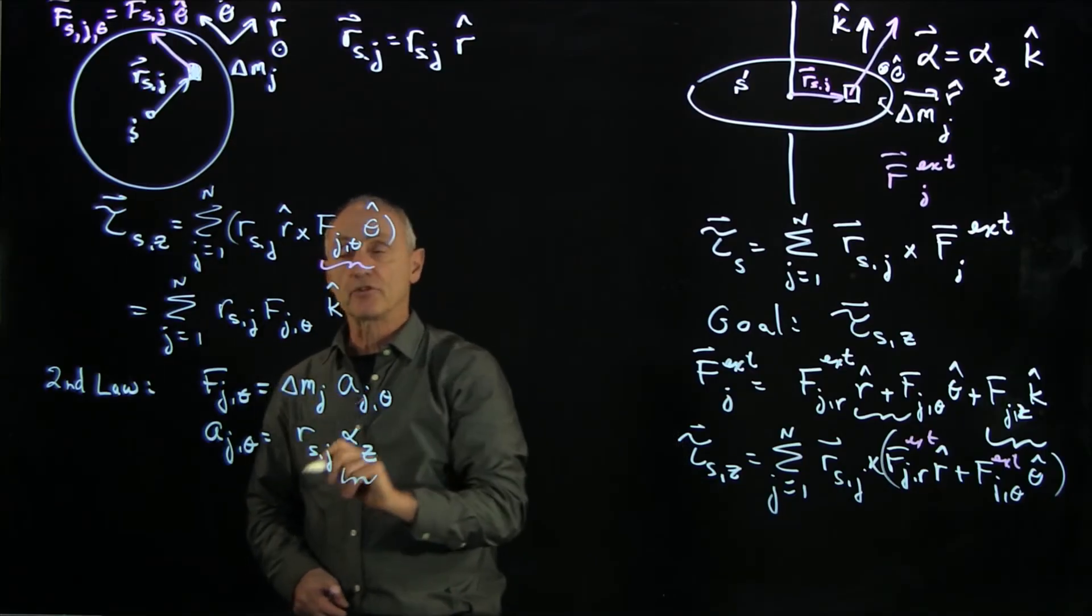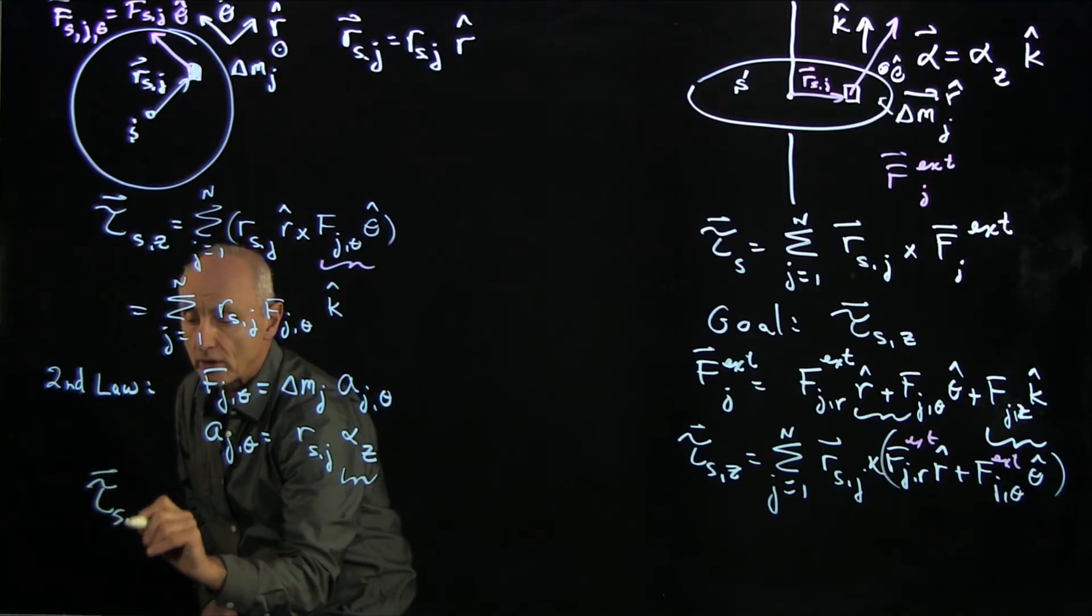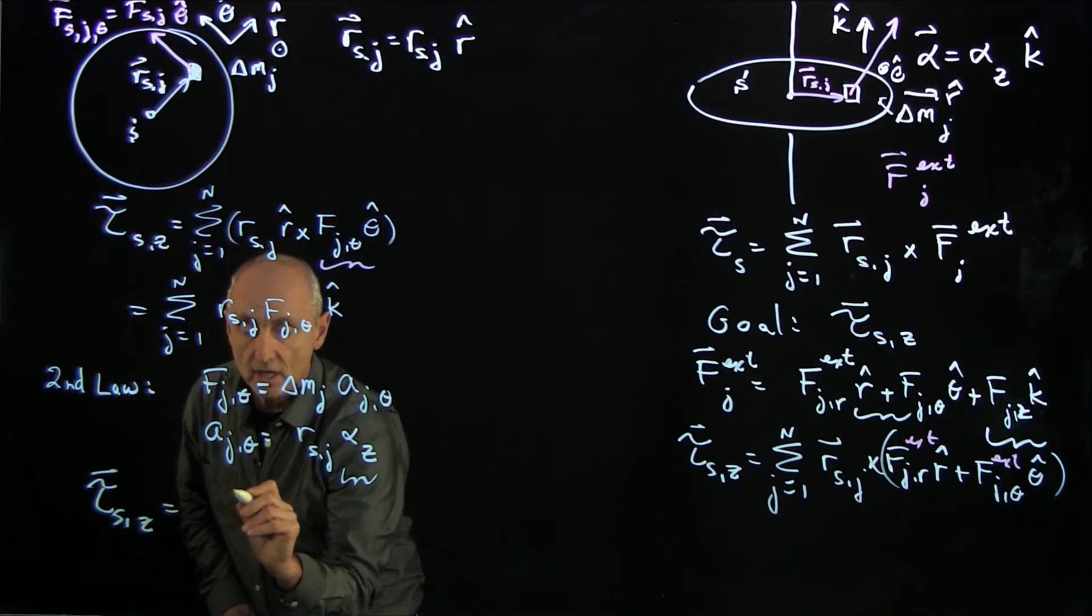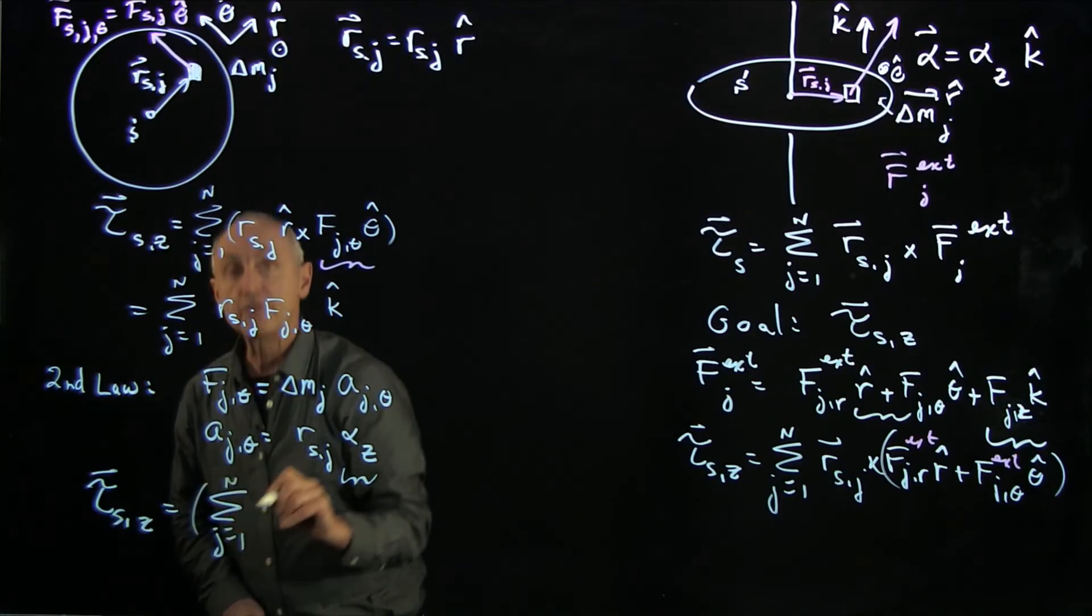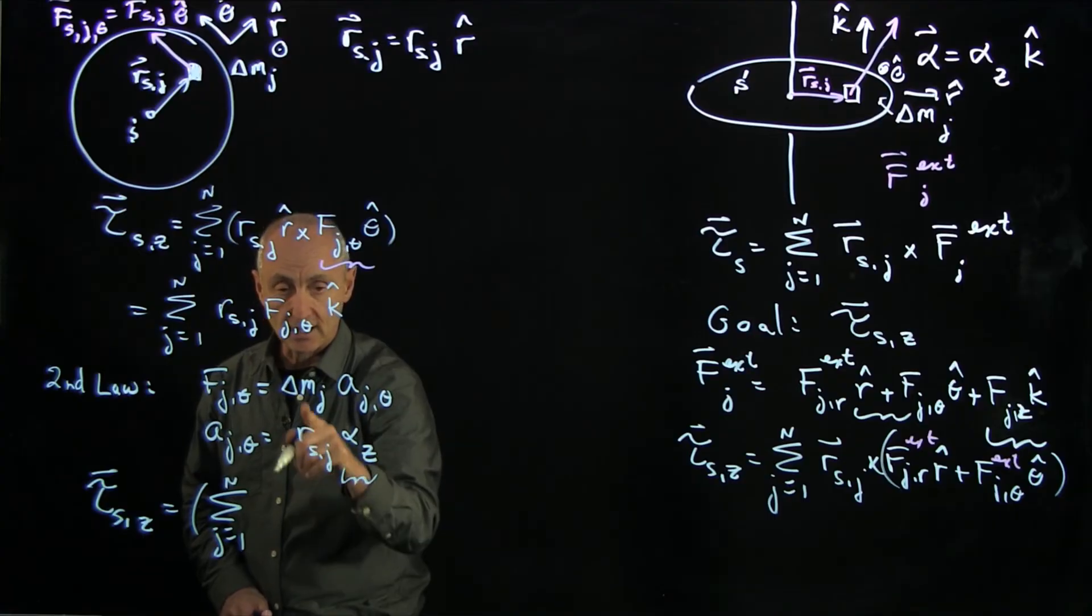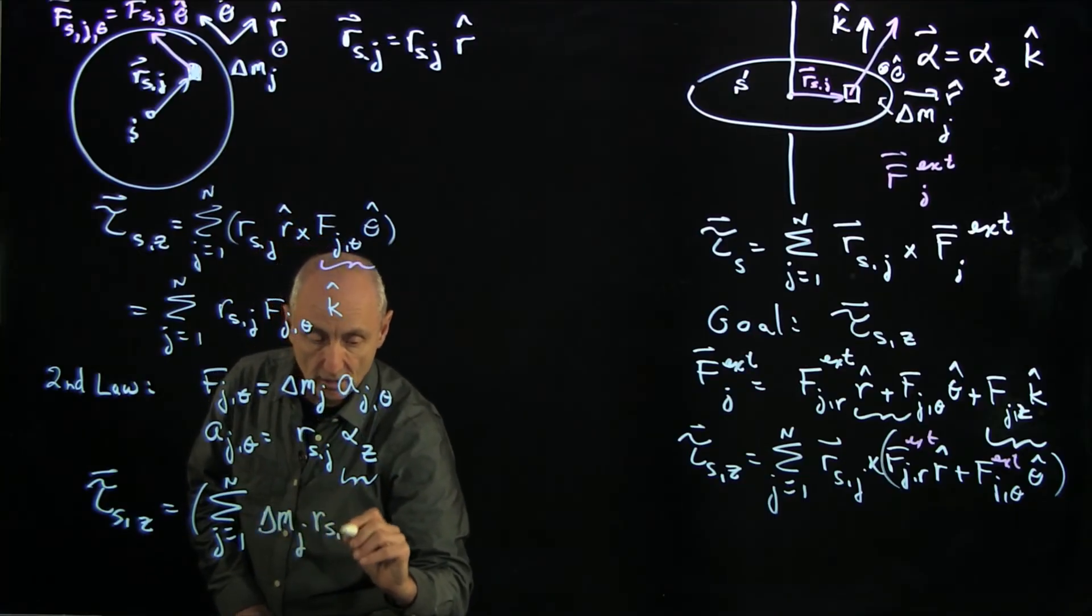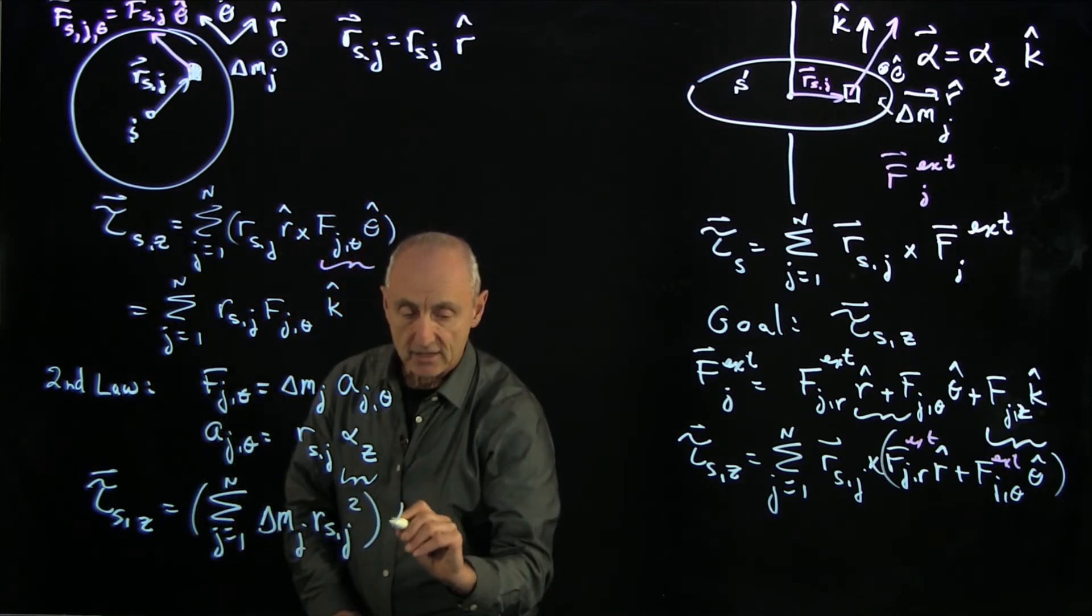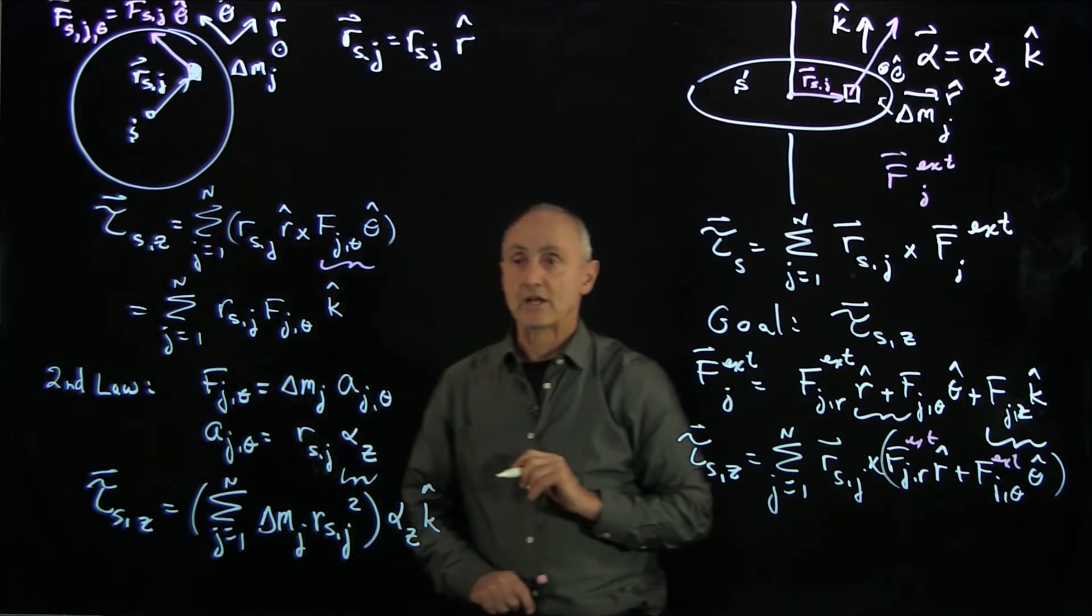And so our sum for the torque can now be written in the following way, the z-component of the torque. Now, I'm going to do something here, which is I'll write j equals 1 to n, a parentheses mark. I have one of the r_sj's. I have another r_sj, a delta m_j. So I have delta m_j r_sj squared. But every single component has the same alpha z. And we're in the k hat direction.